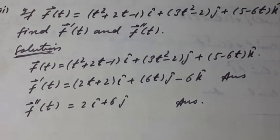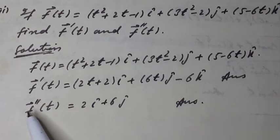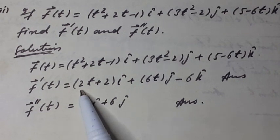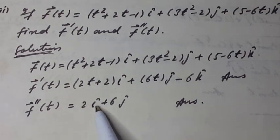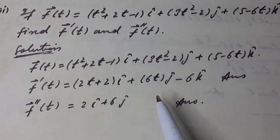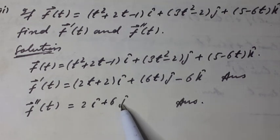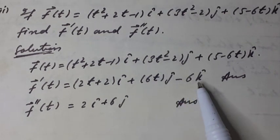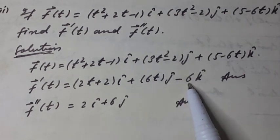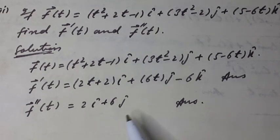Second derivative: f''(t) is equal to the derivative of the coefficient of î, which is 2 î, plus the derivative of the coefficient of ĵ, which is 6 ĵ, and the derivative of the coefficient of k̂, which is 0. So this is our answer.